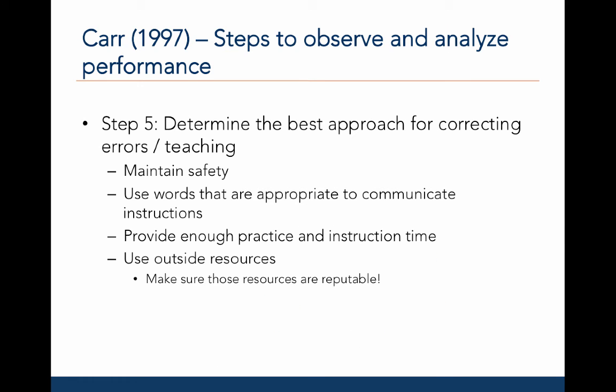The fifth step involves determining the best approach for correcting errors and teaching new skills that build upon the fundamental movement pattern. One must consider maintaining the safety of the participant — for example, if a child is practicing their overhand throw, how many throws would be appropriate and would not result in injury. You should use words appropriate for the individual when communicating instructions, provide sufficient opportunities to practice, and give sufficient time for instruction. Lastly, use outside resources like coaching guides, textbooks, and websites to supplement information or employ a different format suitable for a particular skill.